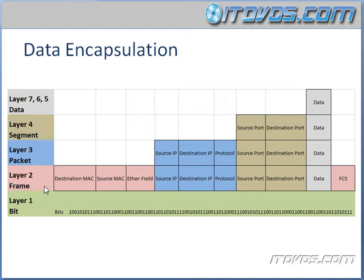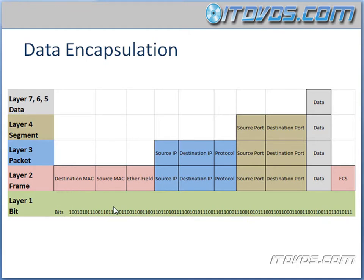Then we make our way down to layer 2, where the packet is encapsulated and becomes a frame. The destination MAC address and source MAC address are added, along with the EtherType field. Then FCS — frame check sequence — is added so that we can perform error detection on this frame to make sure there wasn't any kind of corruption as it transferred over the network.